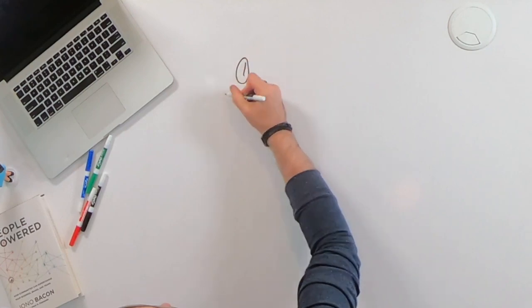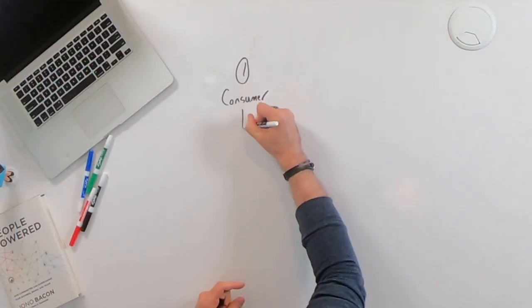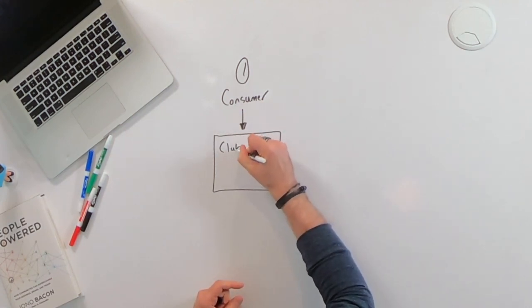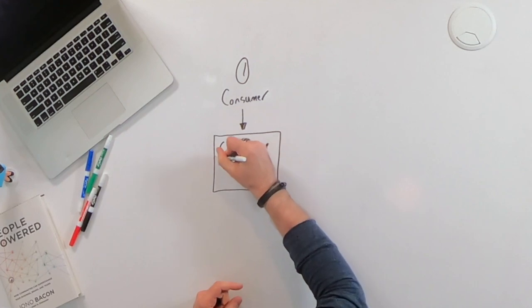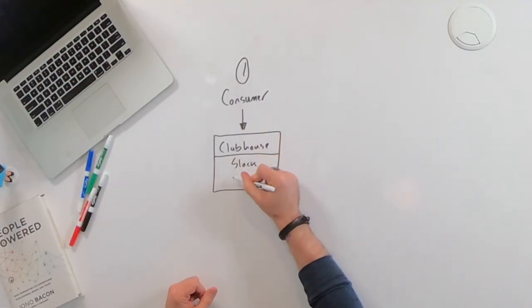Now, the first model that I want to talk about is called a consumer model. And the consumer model is essentially a community where people come together because they've got a common interest or a shared passion. It could be a musician such as Taylor Swift or a band like Iron Maiden, or it could be a video game or a sport or a movie or something along those lines. And the good news about this model is that they're fairly straightforward communities to put together because what you do is you create a clubhouse. And I don't mean the audio platform, I'm talking about a place where people gather online or in person. So in most cases, this is usually going to be something such as a Slack channel or a forum.